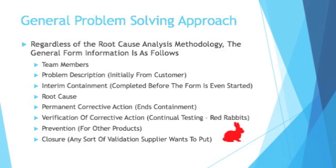You'll also need verification of the corrective action — a way to show it works and that you're testing it on a continual basis. A common method is the red rabbit: a non-conforming part made on purpose, usually painted bright red to identify it as non-conforming. The red rabbit will be non-conforming in the exact same way as the part that reached the customer. For example, if a part was too long, you implement a countermeasure and then use a red rabbit that's also too long to confirm your machine's sensors catch and reject it every day.